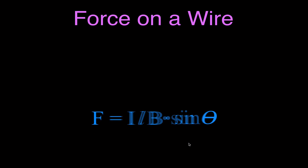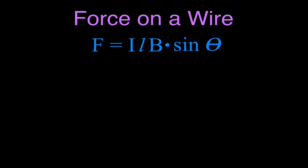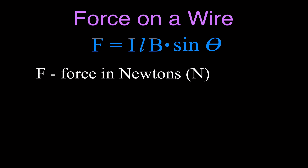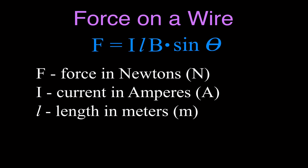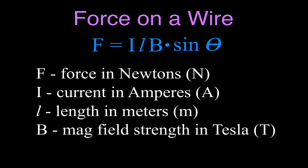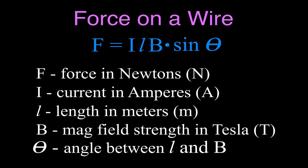Let's go over each variable. F is the force, measured in newtons. I is the current, measured in amperes. L is the length of the wire — specifically the length of the section of wire that's inside the magnetic field — and it must be in meters, so convert from centimeters to meters. B is the magnetic field strength, measured in teslas. And theta is the angle between the wire and the magnetic field.